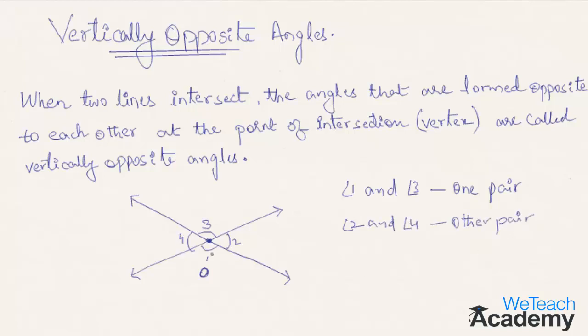One more thing you need to remember is that the pair of vertically opposite angles are always equal. Hence we can say angle 1 is equal to angle 3, and angle 2 is equal to angle 4.